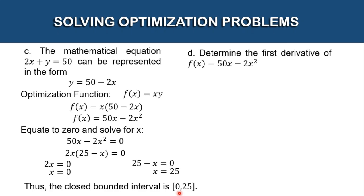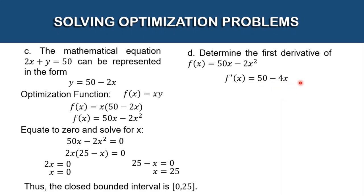After finding the closed bounded interval, we find the critical number — that's for letter (d). Before getting the critical number, we need the first derivative of f(x) = 50x - 2x². The derivative of 50x is 50 and the derivative of 2x² is 4x, so f'(x) = 50 - 4x.